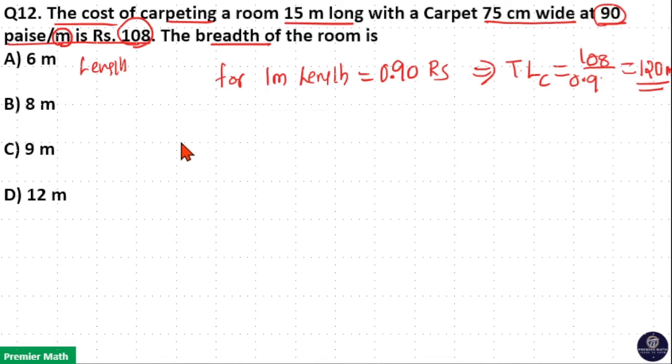Here, carpeting a room means area of carpet is equal to area of room. So area of carpet means length and breadth of the carpet. The length of the carpet is 120 meters and breadth of the carpet is 75 centimeters, so 75 by 100 meters.